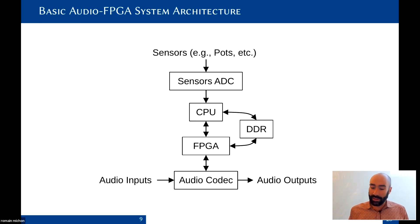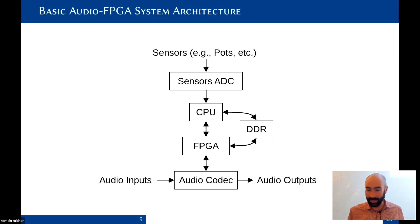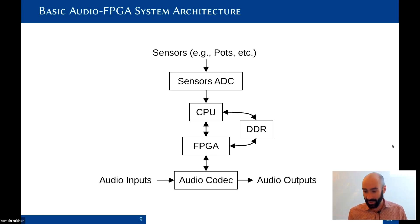The CPU handles higher-level interfaces — like sensors or a GUI — while the FPGA communicates directly with the audio codec, since they can just be wired together. There's no operating system, nothing like that — it's pure hardware. That's why you get such good performance.